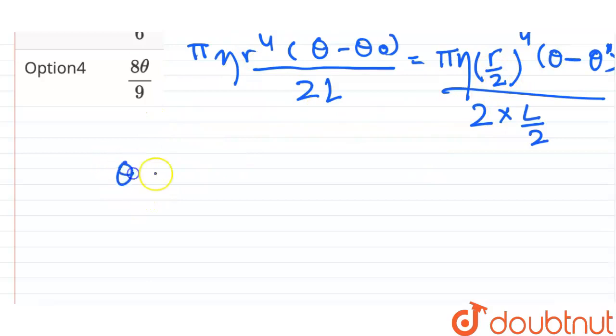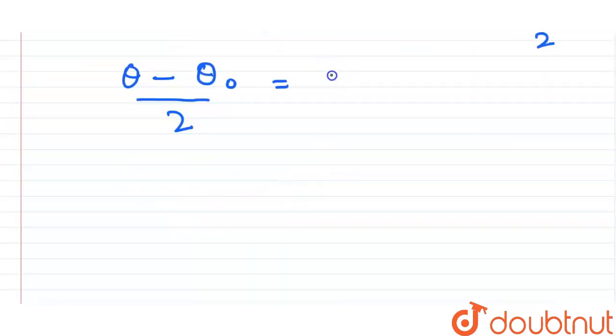Alright, so from here theta minus theta naught is equal to theta naught upon 8, and theta naught is equal to 8/9 theta.